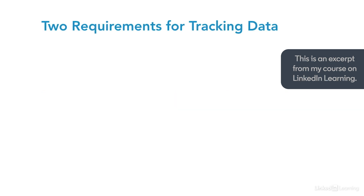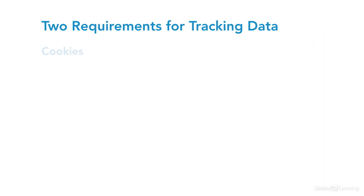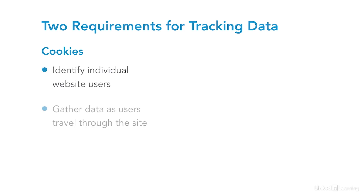In order to retrieve data from users who visit your site, there are two pieces of information that are required. First, users who visit your site must allow Google Analytics to set the first-party cookies that identify the individual users who visit your website. These cookies will gather data on your users as they travel through your site, such as IP address, what type of device they're using, which page they're viewing, and more.